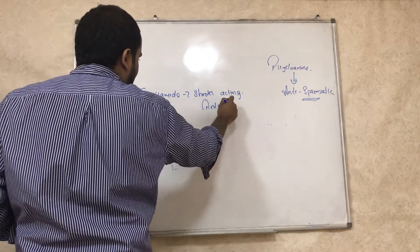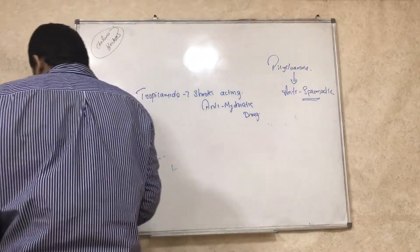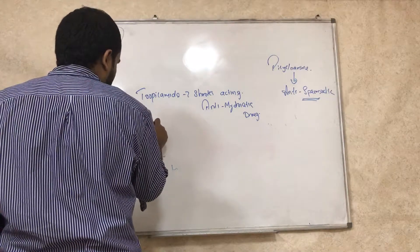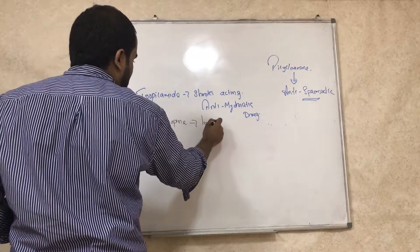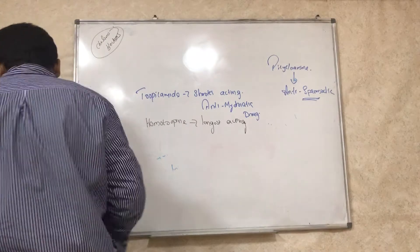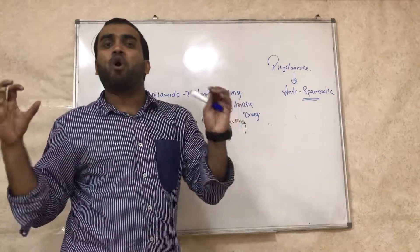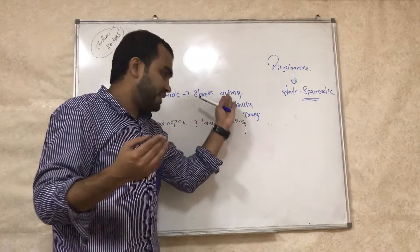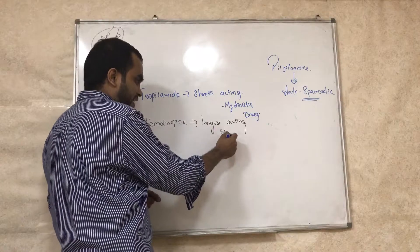And the anti-mydriatic drug. Then we have homatropine. Homatropine. Homatropine is also a mydriatic drug but it is the longest - not anti-mydriatic. We are studying about cholinoblockers, so we are blocking the parasympathetic system. If you block parasympathetic system you will have mydriasis, so active. Remember, mydriatic, cycloplegic. So it is longest acting mydriatic, this is shortest acting.